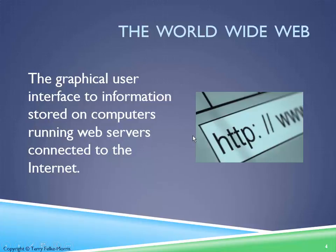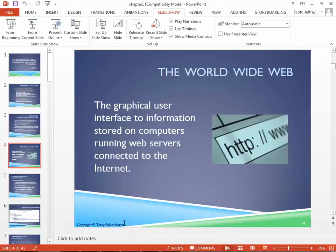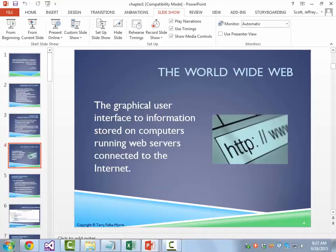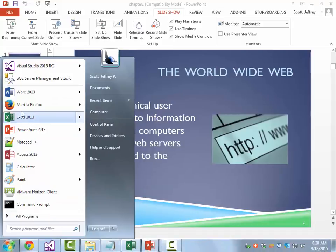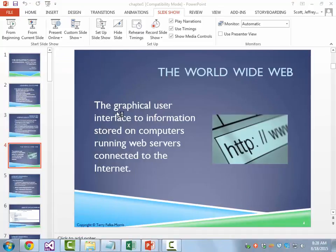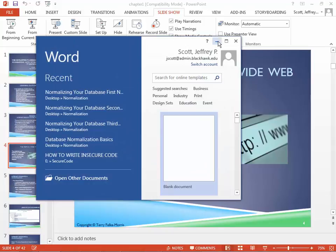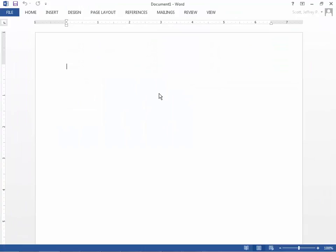The Internet itself started, from a little historical perspective, as a way for the government — and especially the military — to be able to communicate with educational institutions. The World Wide Web, or WWW, as the author defines it, is the graphical user interface to information stored on computers running web servers connected to the Internet. You may have seen stuff like this before, and I'm going to draw a picture to show you my rendition.